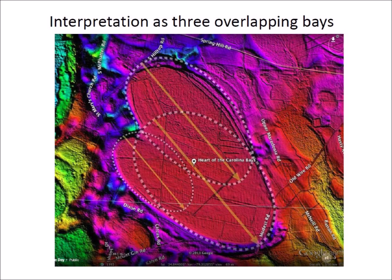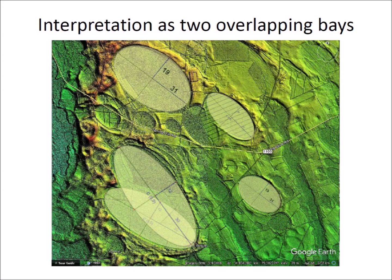Michael Davias proposed that a heart-shaped bay is a mash-up of three Carolina Bay archetype shapes — all three having identical orientation but differing in length and eccentricity, with each lobe of the heart conforming to the curvature of a bay. For this particular heart-shaped bay, Prouty's suggestion that two bays form the heart shape requires using very elongated ellipses with width-to-length ratios of about 0.4, corresponding to impact angles of about 24 degrees — smaller than the typical angle of 35 degrees associated with most Carolina Bays, which corresponds to a width-to-length ratio of approximately 0.58.